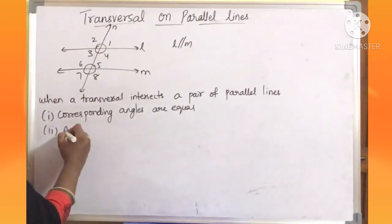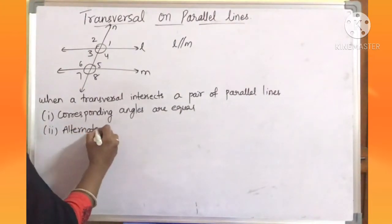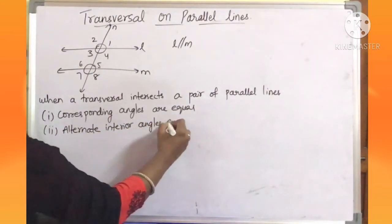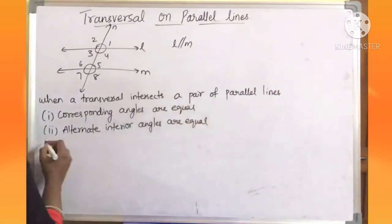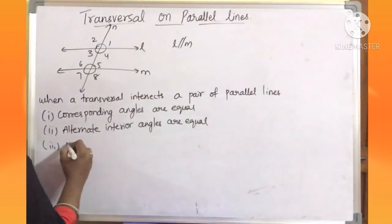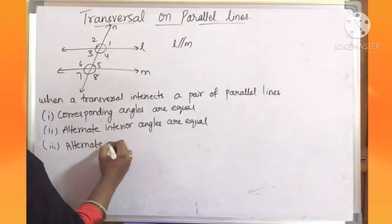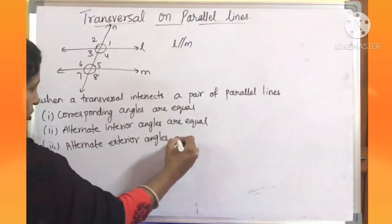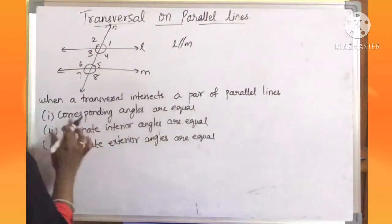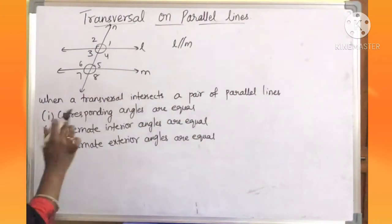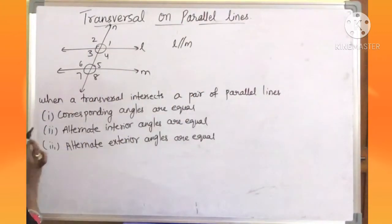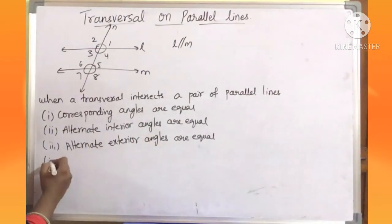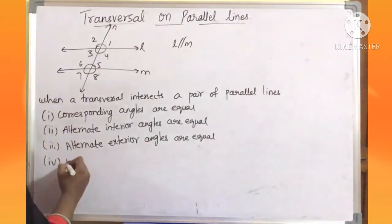Each pair of alternate interior angles are also equal. And each pair of alternate exterior angles are also equal. So when a transversal intersects a pair of parallel lines: corresponding angles are equal, alternate interior angles are equal, alternate exterior angles are equal. And coming to the fourth property, interior angles on the same side.